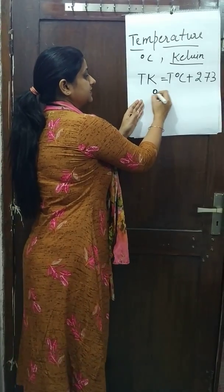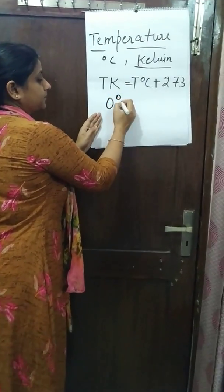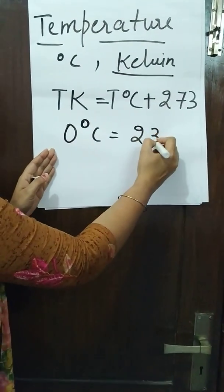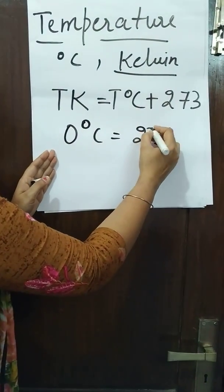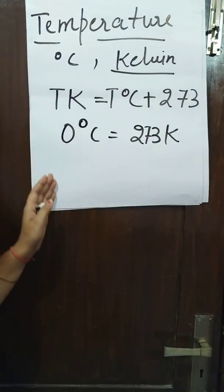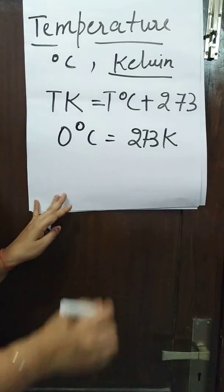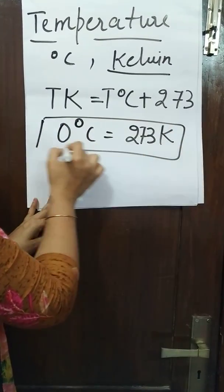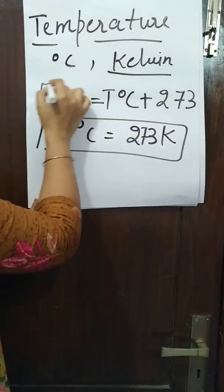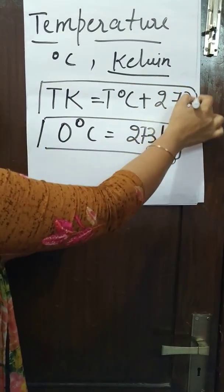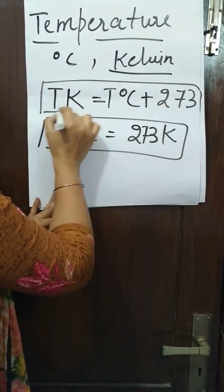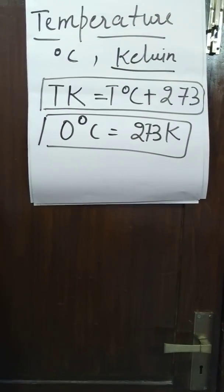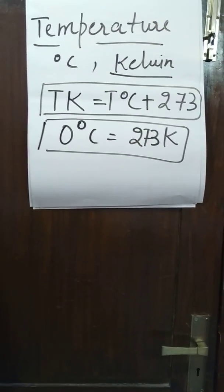0 degree Celsius is equivalent to 273 Kelvin temperature. These two relations are what you have to learn to do the conversions.